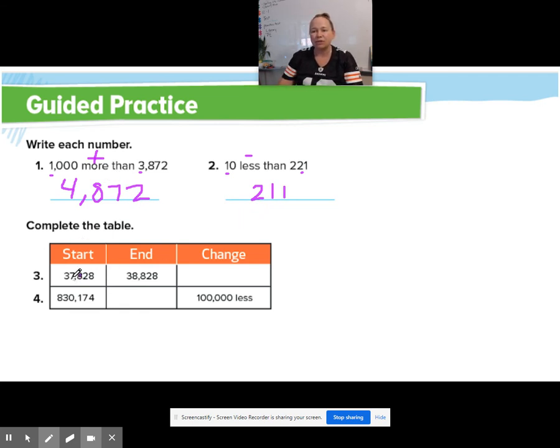Okay. Down here, we're going to complete the table. If we started with 37,828 and we ended with 38,828, oh, I can see that there's 1,000 more. What was the change? I just said the answer. 1,000 more was the change. I don't think I'm going to fit it in this box. That's okay.